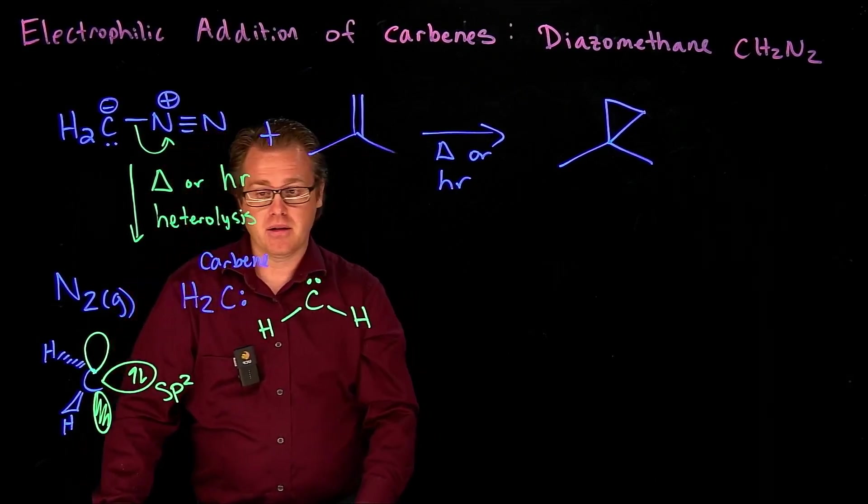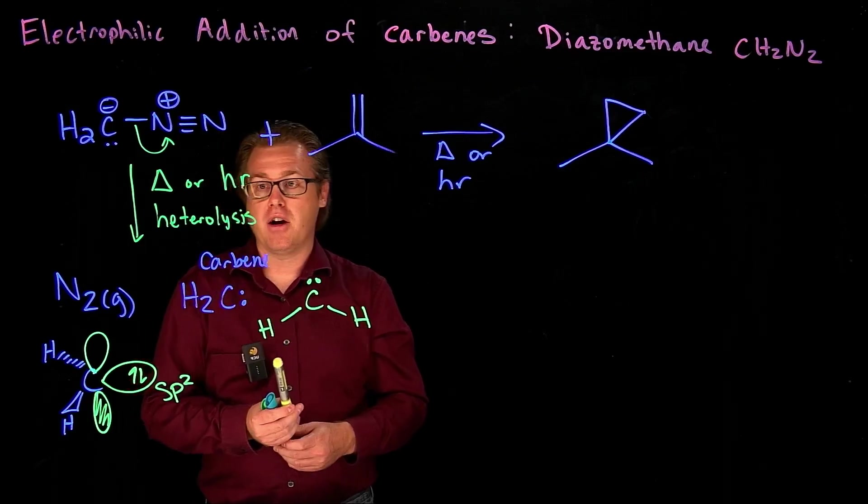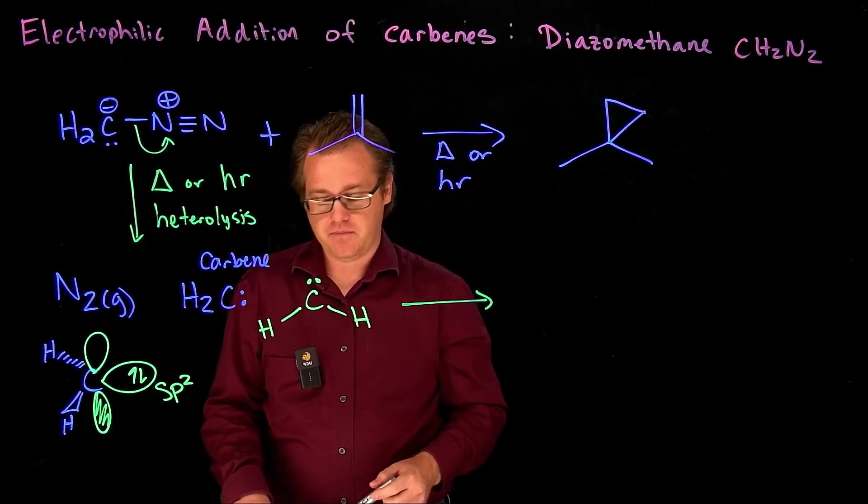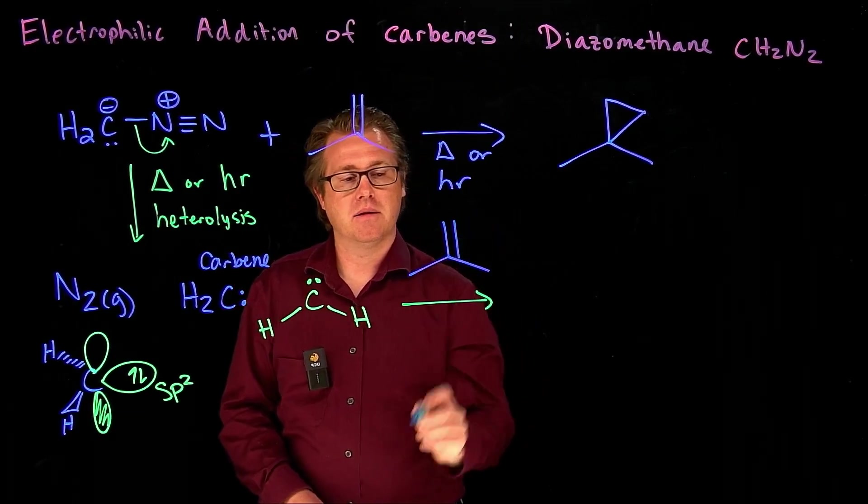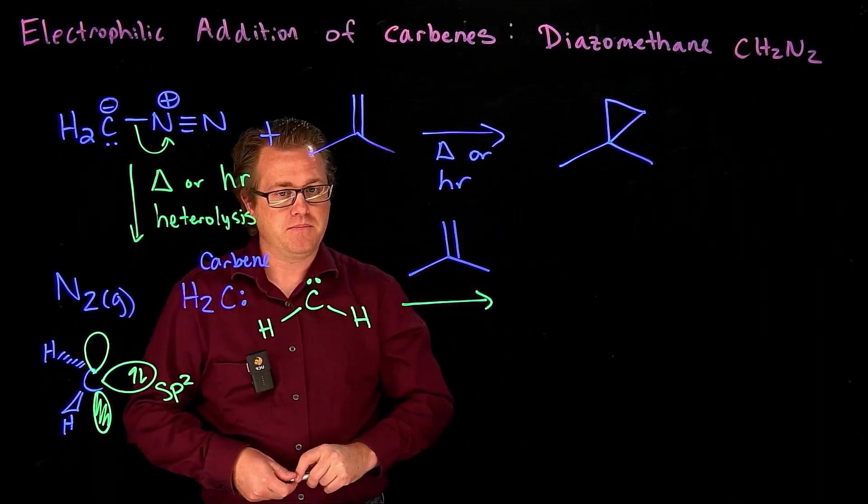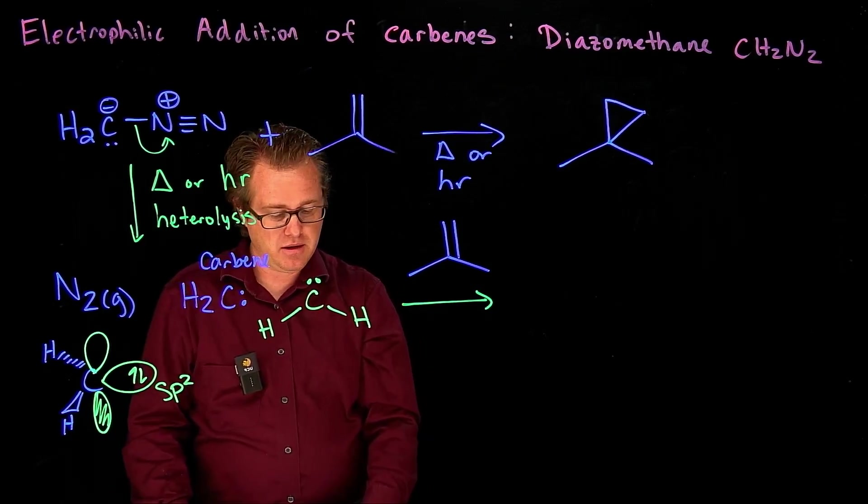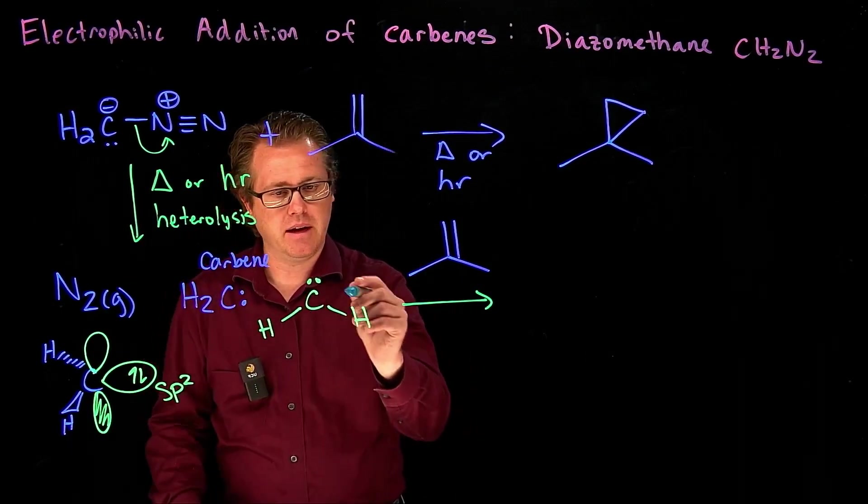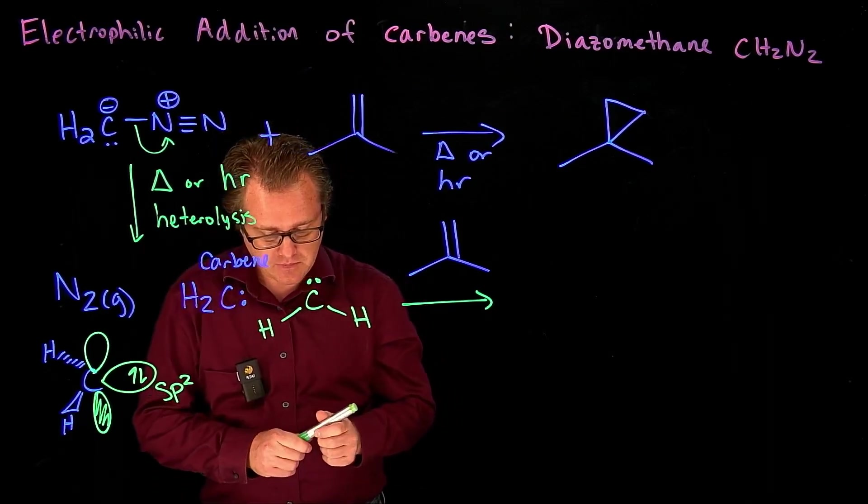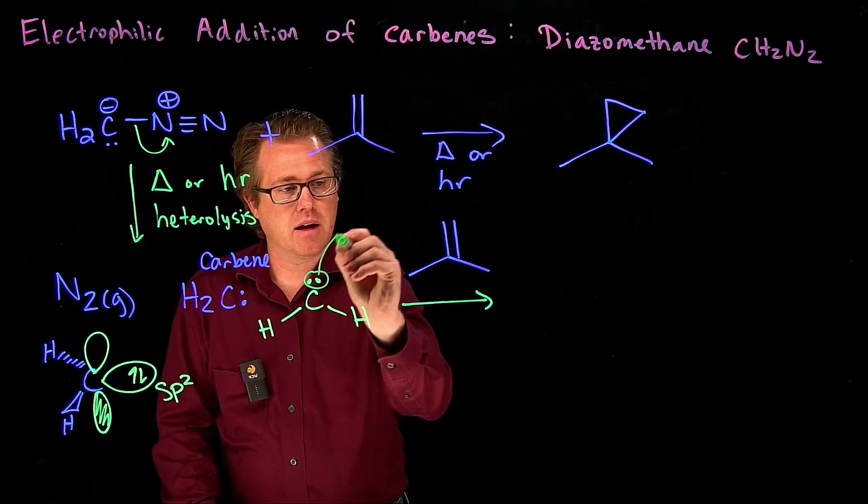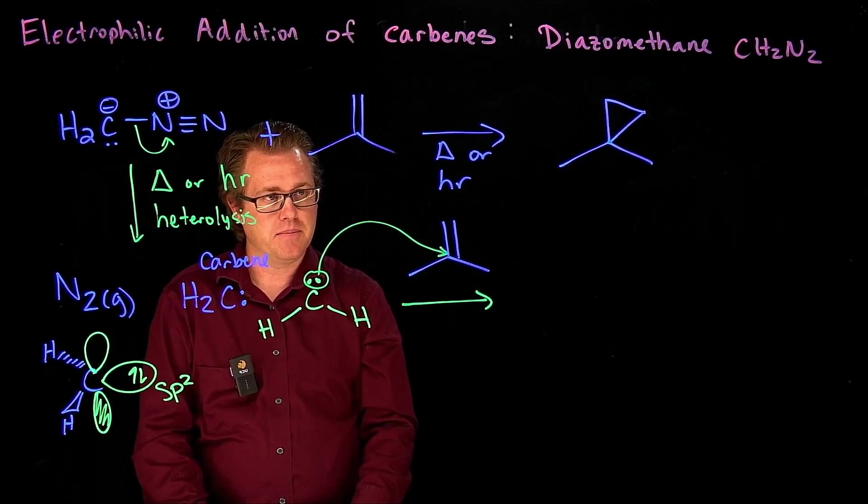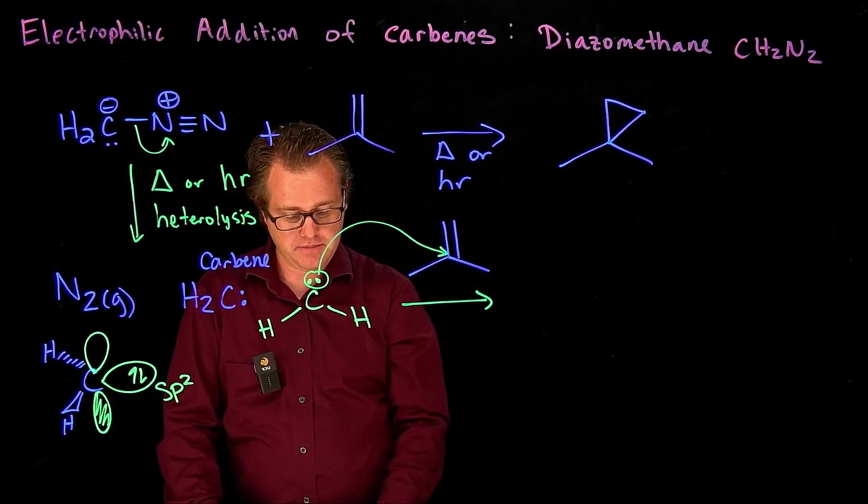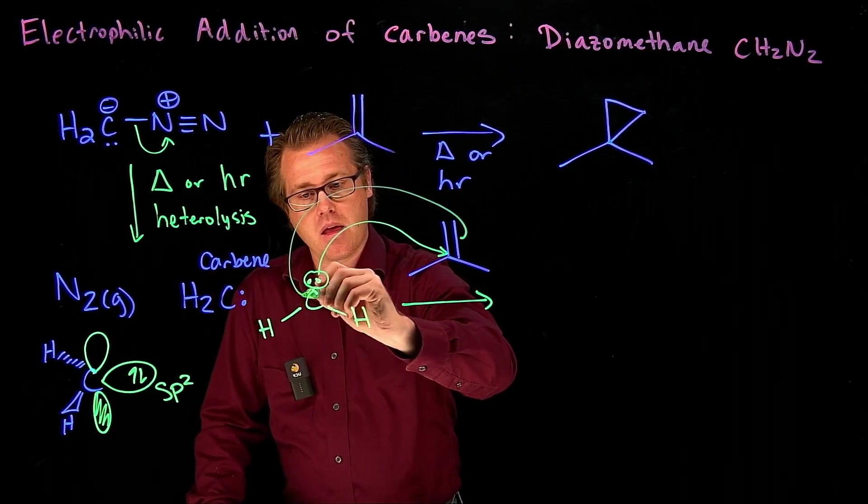So now we have this carbene here that we've generated. And now we can treat that with our molecule of interest here. So let's draw our molecule. So that would be this guy right here, our alkene. And what do we see here? We have a lone pair on this oxygen here. And so what we can have happen is that this lone pair right here, let's see, choose a different color here. So this lone pair right there can come in and attack at that carbon. And then the pi electrons in the double bond can then come and attack this carbon.